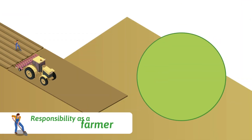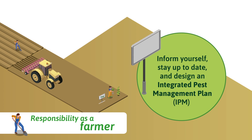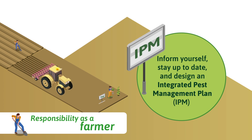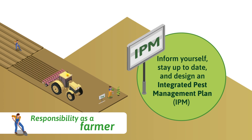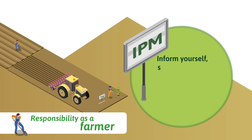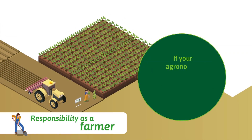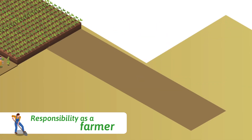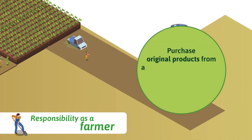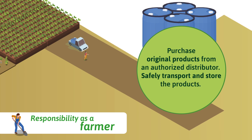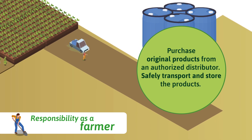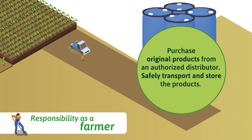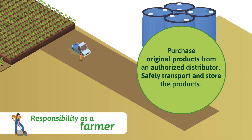If you are a farmer, your responsibility is to design an integrated pest management plan. If your agronomist suggests using chemical control to manage the pests, purchase original products from an authorized distributor and safely transport and store the products.